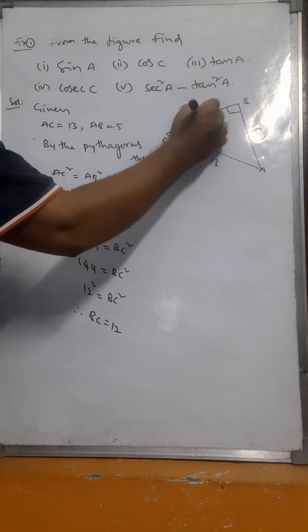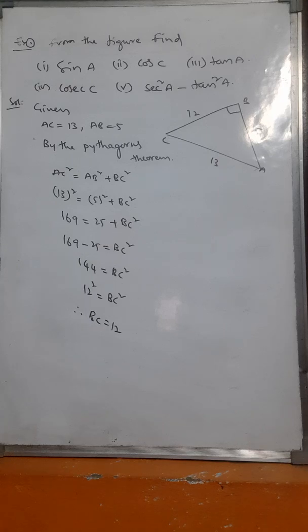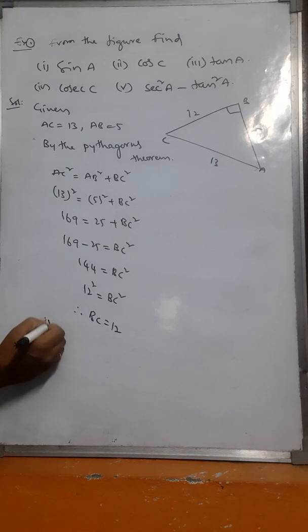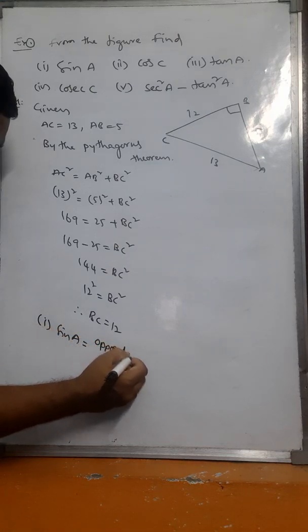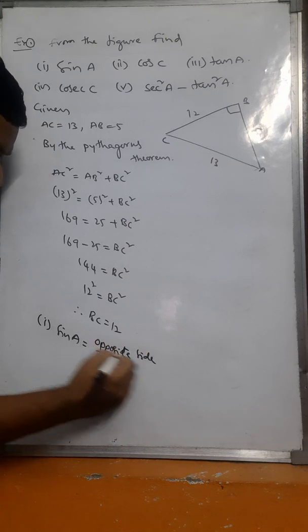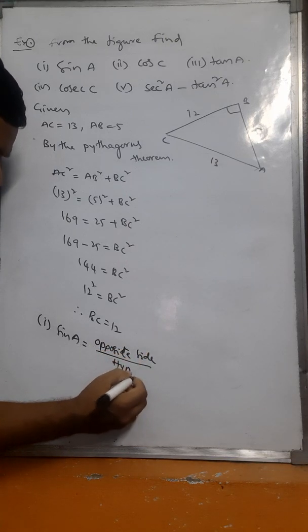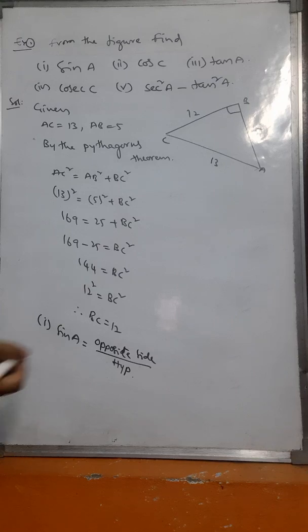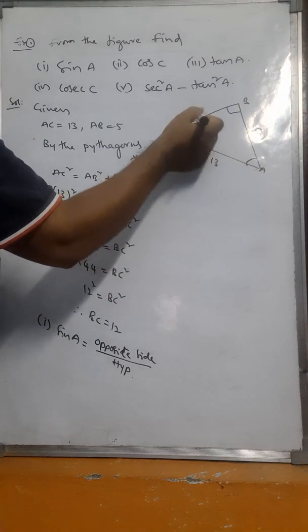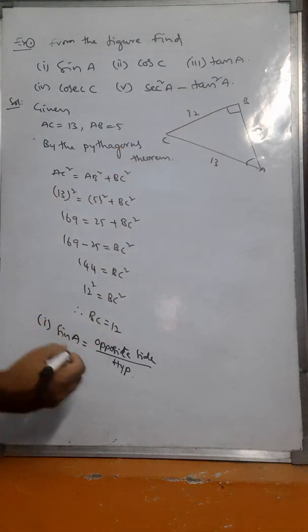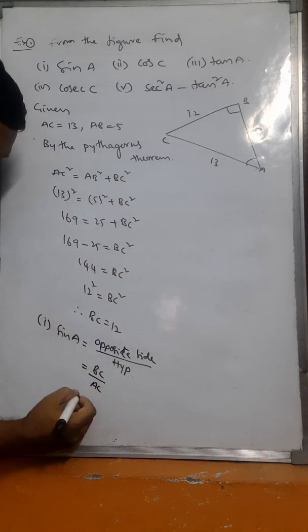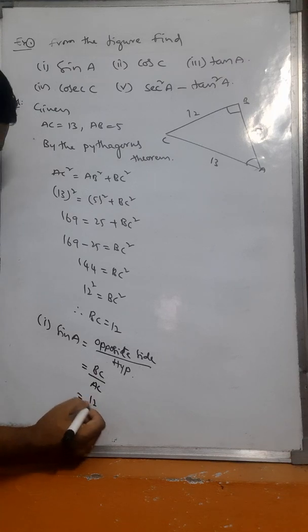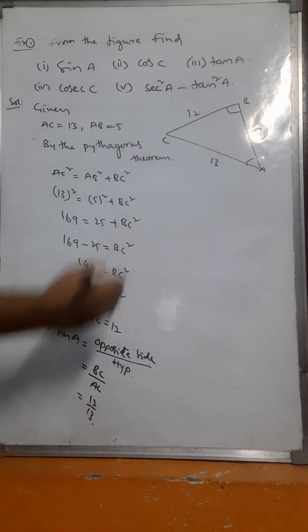Now, sine A means opposite side by hypotenuse. The opposite side to angle A is BC, so sine A equals BC by AC, which is 12 by 13.